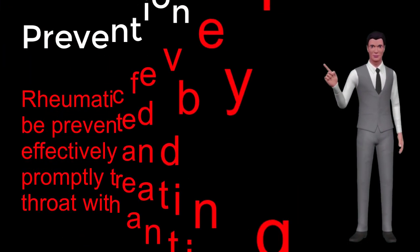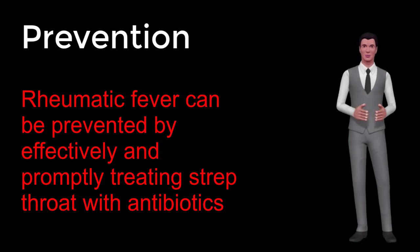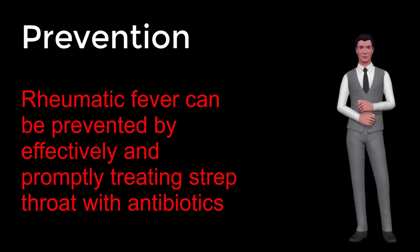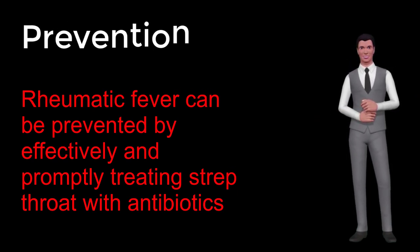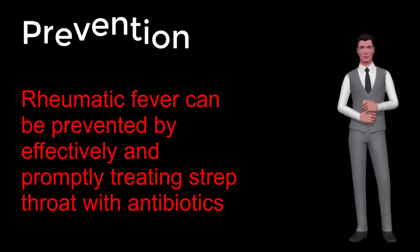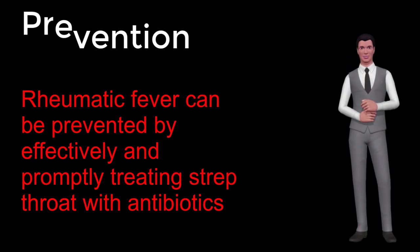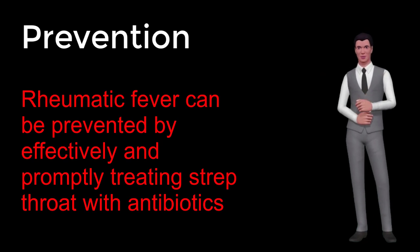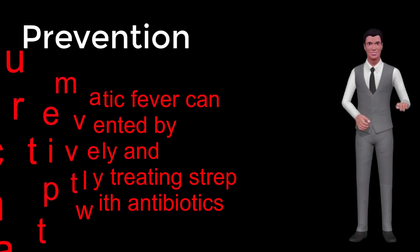Rheumatic fever can be prevented by effectively and promptly treating strep throat with antibiotics. In those who have previously had rheumatic fever, antibiotics in a preventative manner are occasionally recommended. As of 2017, the evidence to support long-term antibiotics in those with underlying disease is poor. The American Heart Association suggests that dental health be maintained, and that people with a history of bacterial endocarditis, a heart transplant, artificial heart valves, or some types of congenital heart defects may wish to consider long-term antibiotic prophylaxis.